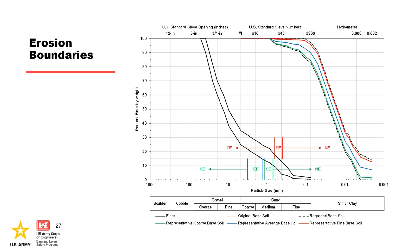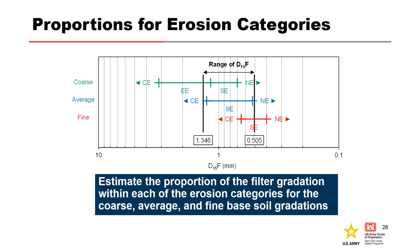After estimating all four erosion boundaries, plot them on the original filter gradation curves on the D15 line. If the filter gradation must be adjusted to account for segregation or washout, then plot that curve as well. The suggested approach is to estimate the proportions for continuing, excessive, and some erosion first, and then calculate the proportion for the no erosion category by subtracting the sum of the other proportions from one, thus making the erosion conditions collectively exhaustive.